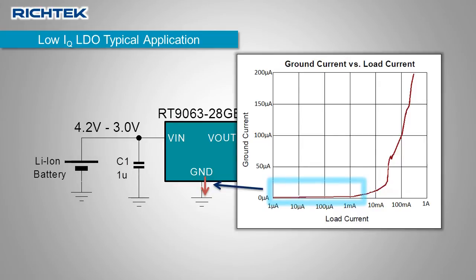But at higher load currents, the ground current increases. This is done to improve the dynamic behavior of the LDO. When a sudden high load is encountered, the internal control circuit uses more energy to regulate the output voltage.